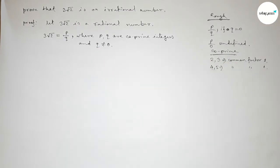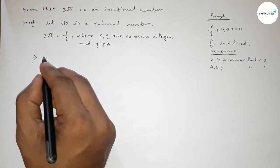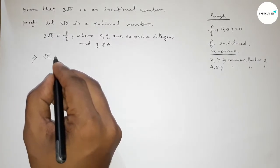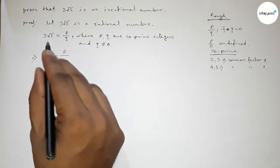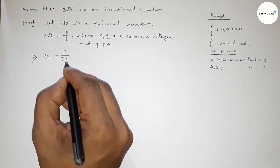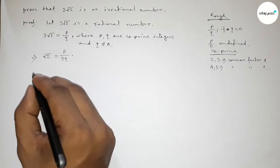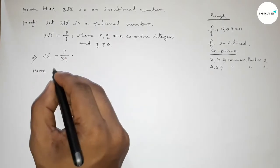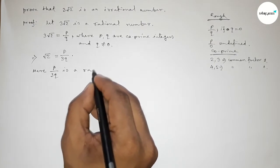Now this implies that we can write root 2 equal to p by 3q. So p by 3q is a rational number, so this is a rational number.